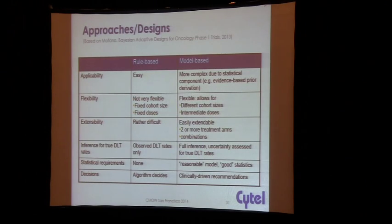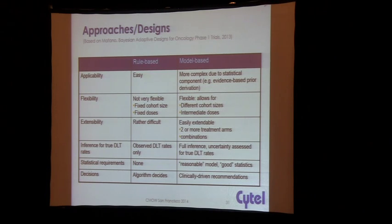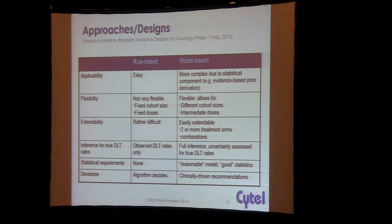In general, comparing rule-based methods — really 3+3 — versus model-based: rule-based is very easy to implement because you don't need statisticians; model-based methods are more complex and require statistical support. In terms of flexibility, rule-based methods are not flexible — fixed cohort size, fixed doses. With models, you can change cohort sizes, change doses, and insert intermediate doses not previously planned.